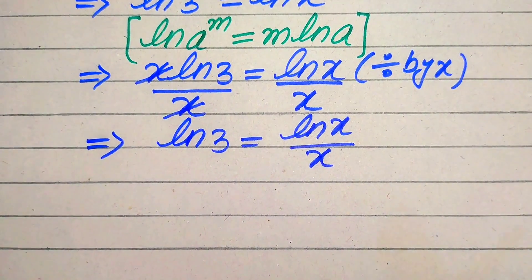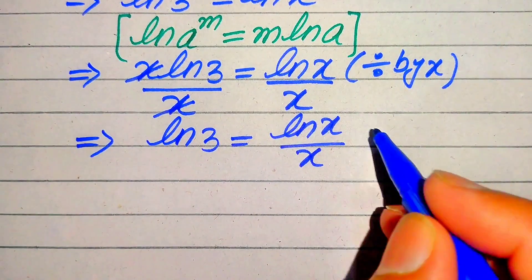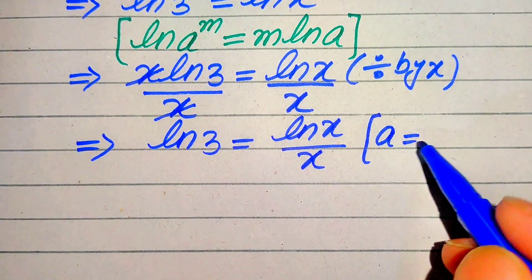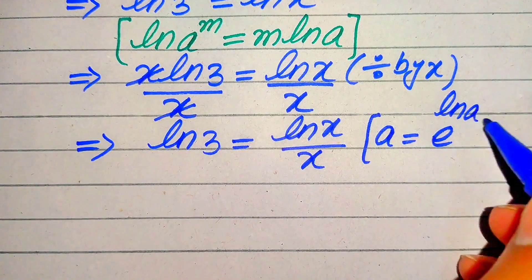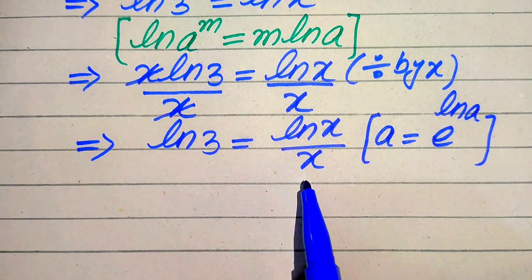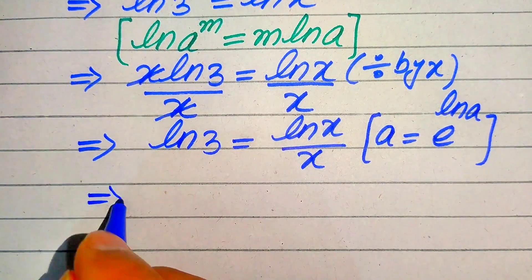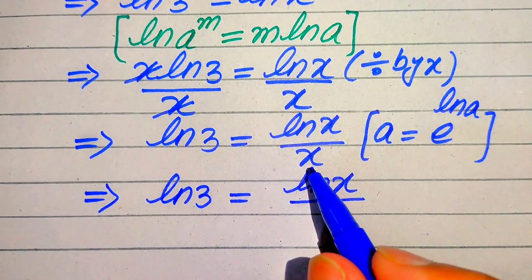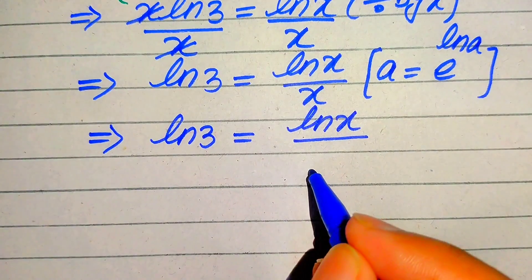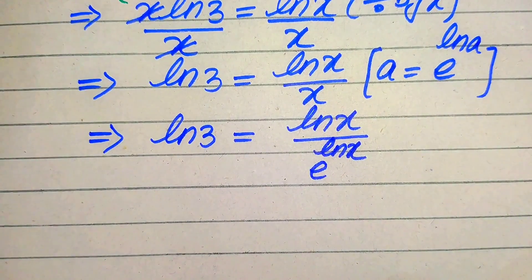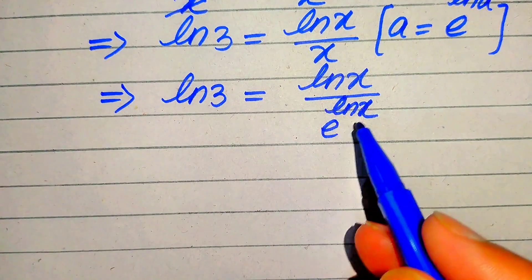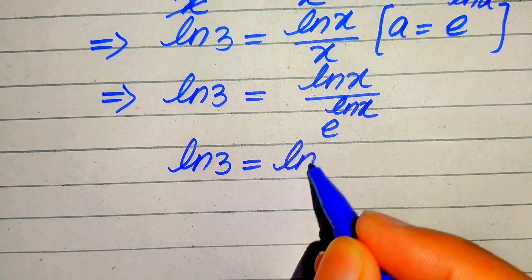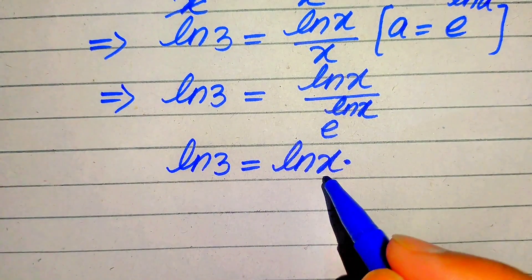We rewrite the denominator term: we know that any number a can be written as e to the power of log a simultaneously applying log and antilog. According to this rule, we write x as e to the power of log x, so we have log 3 equals log of x divided by e to the power of log x. Moving the denominator term upward, its exponent becomes negative, giving us log x times e to the power of minus log x.